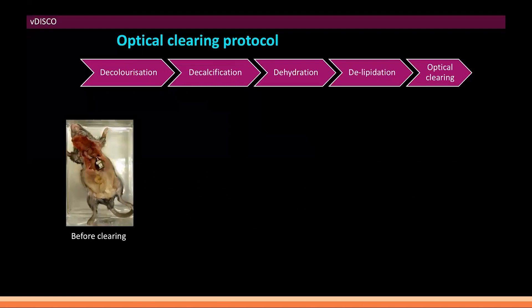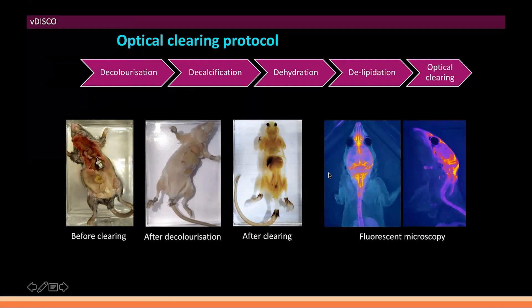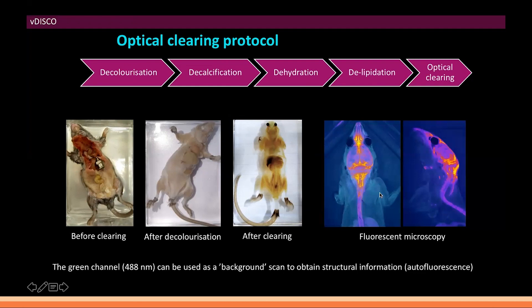If you want to clear not just organs but whole mice, you can also do this with a few additional steps. We have used the vDISCO method, performing decolorization and decalcification, and then our regular clearing steps. Here we have also injected a dye into the CSF, and we can now see this in the whole body of the mouse. We also see how the green channel — the 488 channel — can be used to obtain structural information. It has higher background than the other channels, which can be a problem if the fluorophore of interest is in the green spectrum, but if not, it's very good for getting the whole structure.